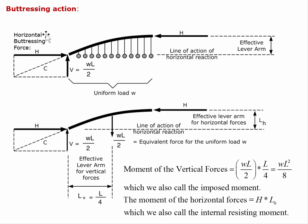The next step is to resolve the distributed load W into a point load. With half of the arch in place, we have half of the original load — the original load for the whole arch was W times L, so the load for this half is W times L over 2, and that force will be at the center of the distributed force. We now have a horizontal force couple consisting of the two H forces, and a vertical force couple consisting of the reaction component WL/2 and the load component WL/2.